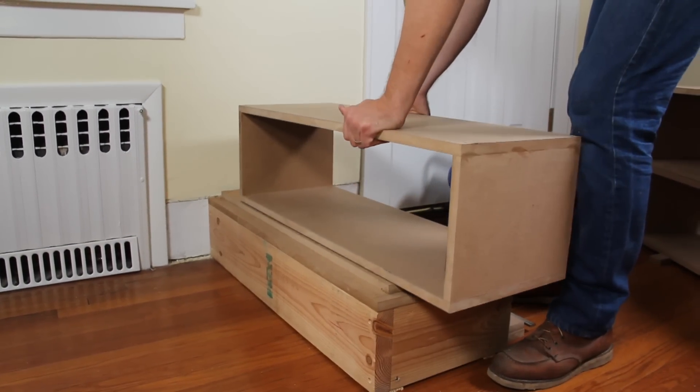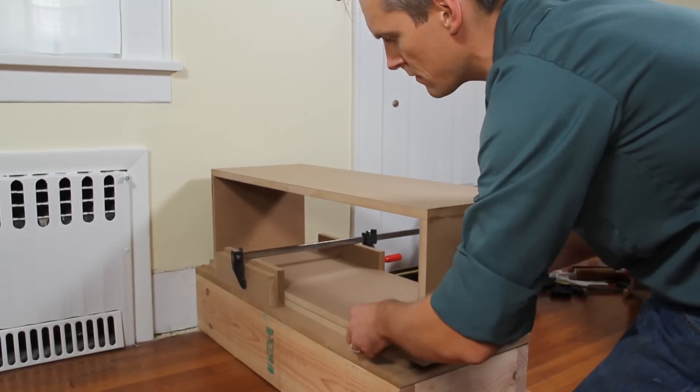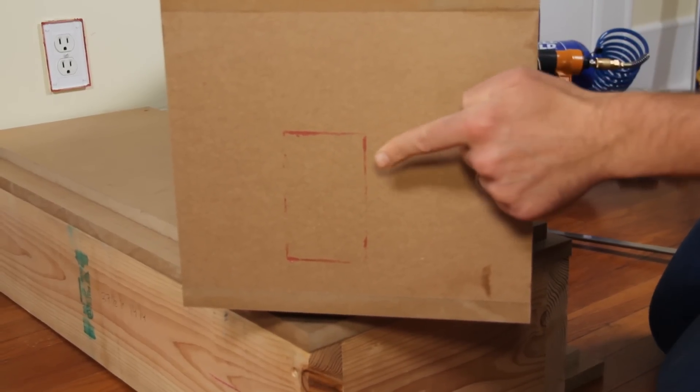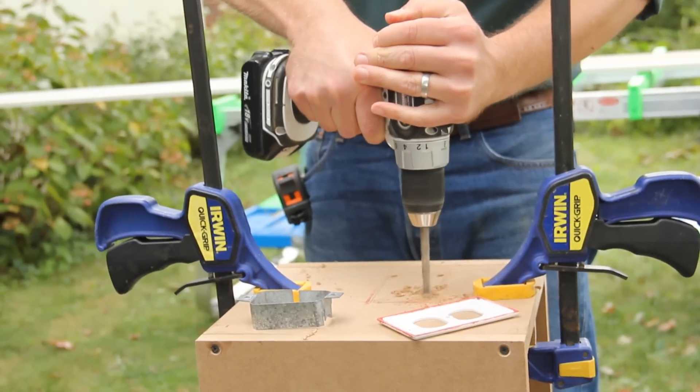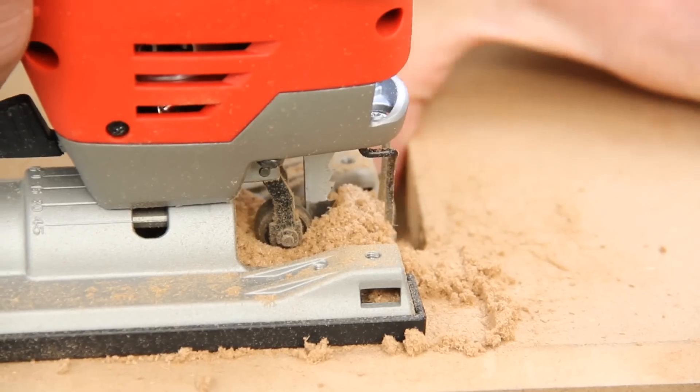Okay, about that receptacle. Press the MDF box against the cover to get the lipstick to transfer an outline. Drill holes at each corner of the outline and use a jigsaw to cut inside the lines.